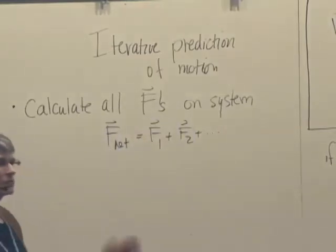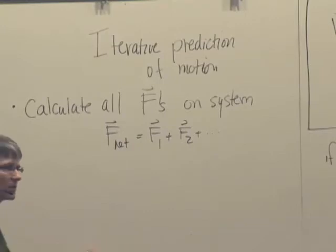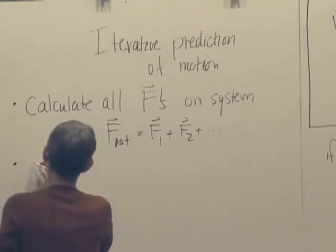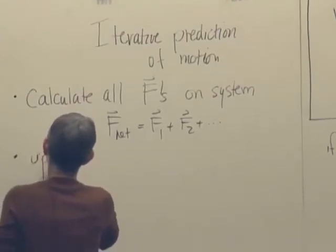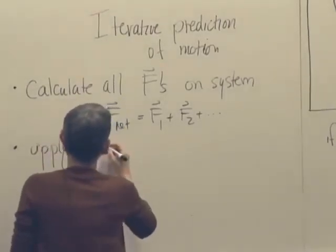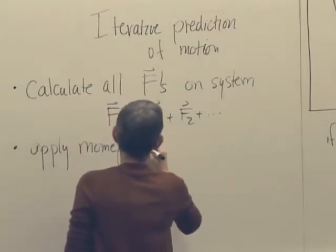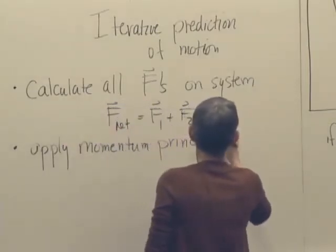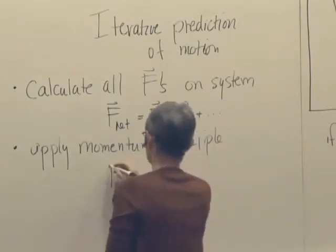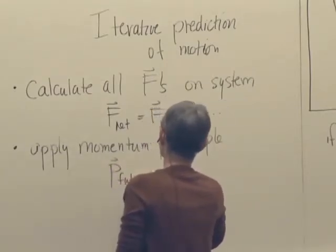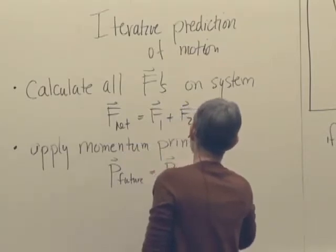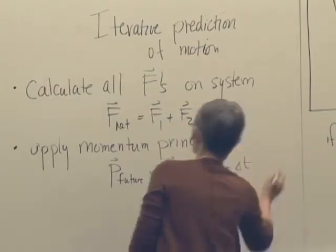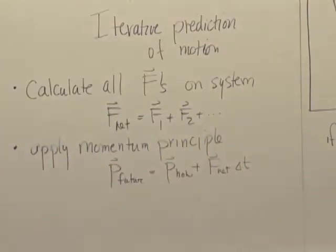So then we use the momentum principle to predict the momentum of the system in the future. So apply momentum principle. So we get P future is P now plus F net delta T. So now we know its momentum, but we don't know where it is.